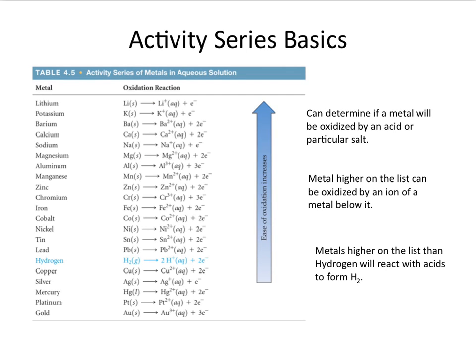The activity series is something that's going to allow us to establish if a metal is going to be oxidized by the substances that it's being exposed to. Specifically, we're going to be focusing on if the metal can be oxidized by acid or particular metal salts.